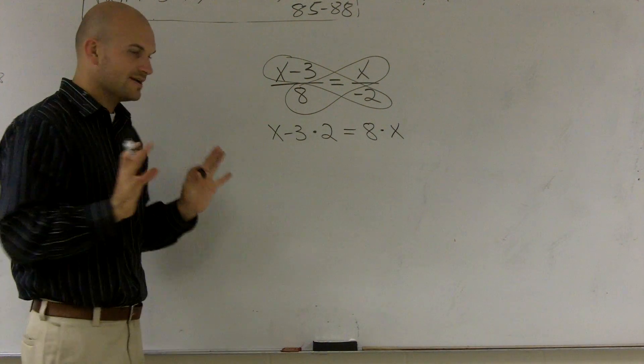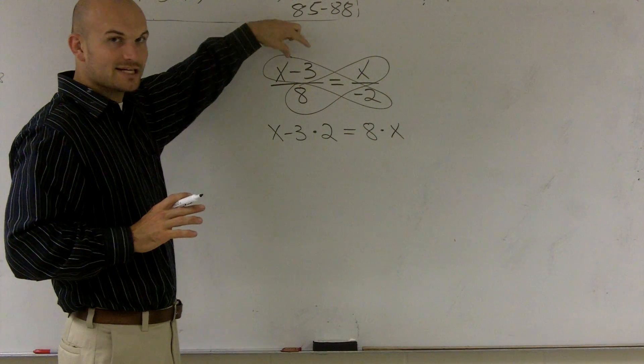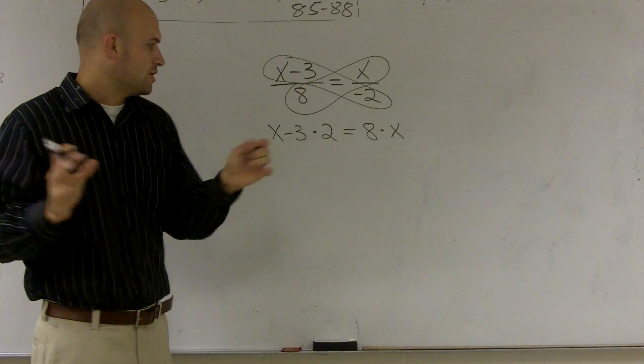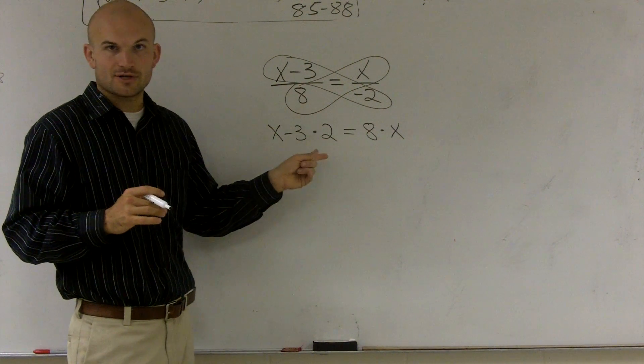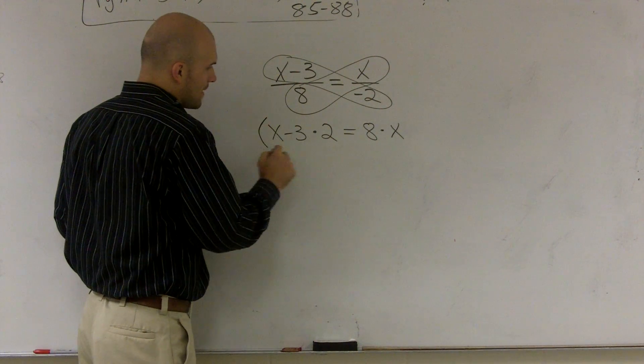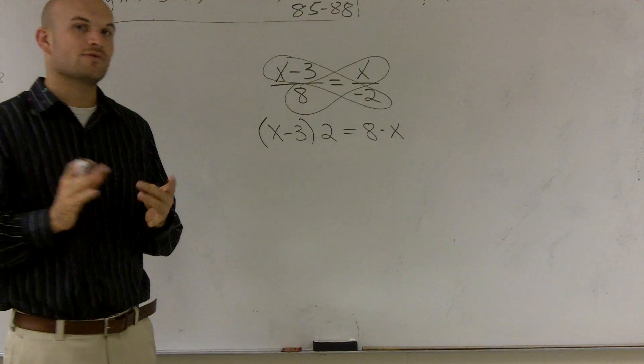Now, be very careful how you write this. This tells you x minus 3 I'm going to multiply by negative 2. They're together. Right now, this just shows negative 3 times 2. I don't want to just multiply the negative 3 times 2. I want to multiply both of them. So what I'm going to do is I'm going to put them in parentheses.